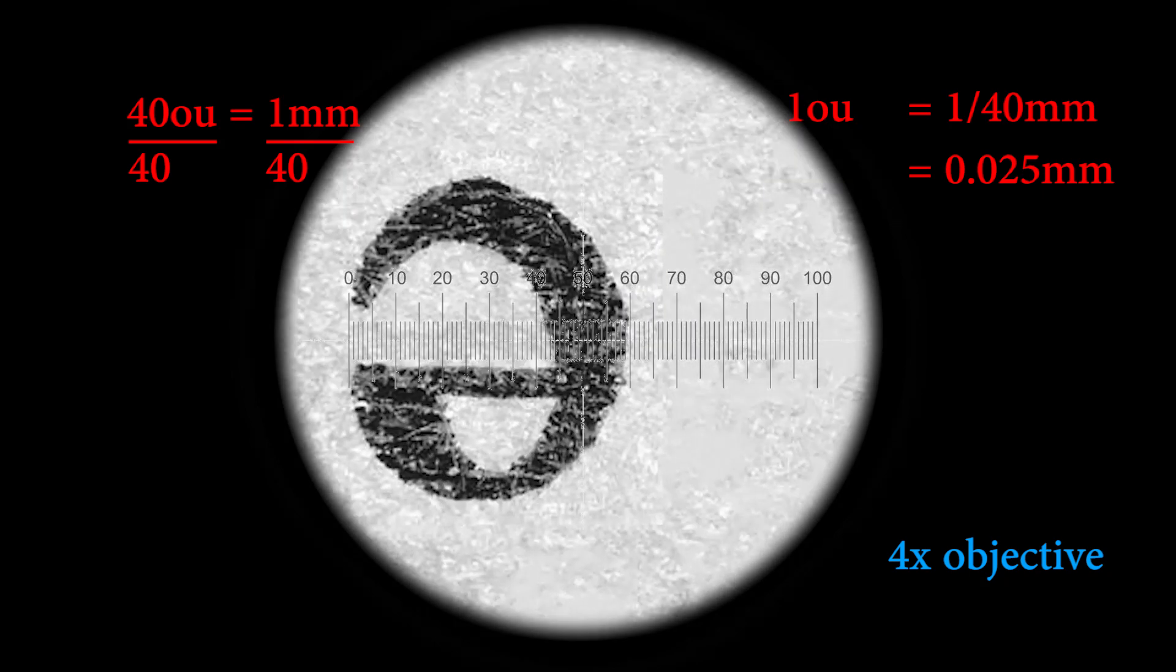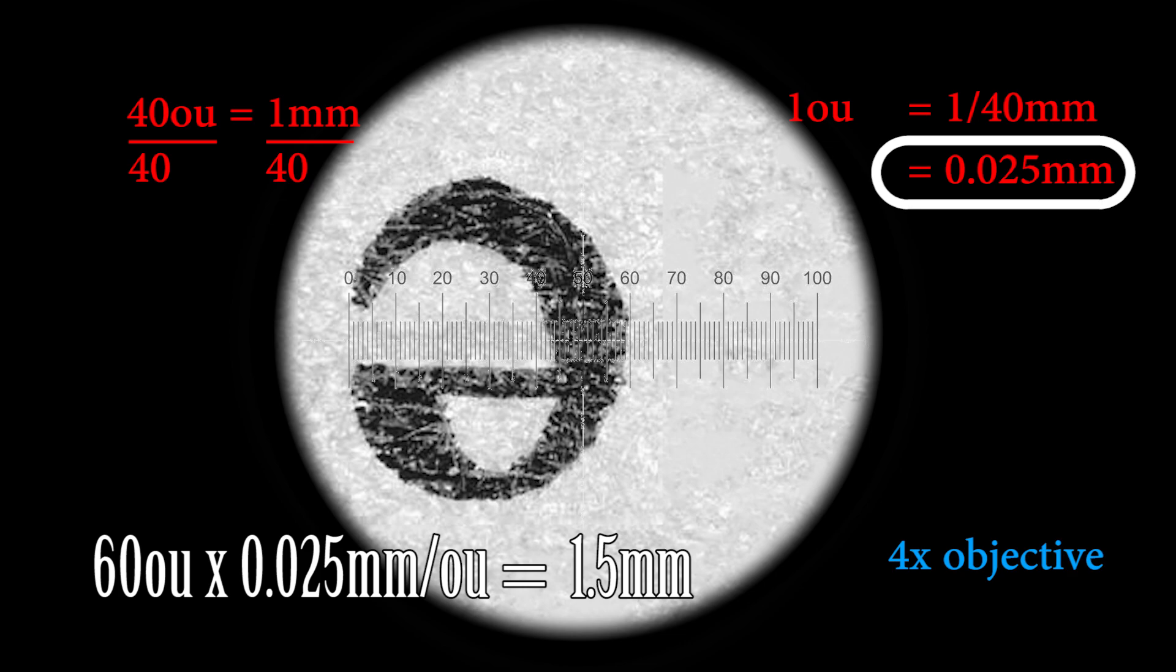We can then count ocular units, in this case 60, and then convert to a millimeter measurement. This letter E is 1.5mm wide because 60 ocular units times 0.025mm per ocular unit is 1.5mm.